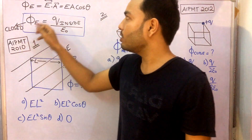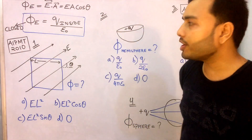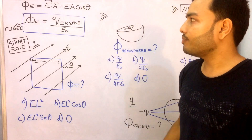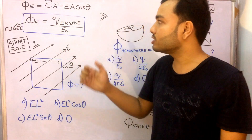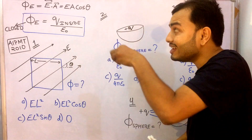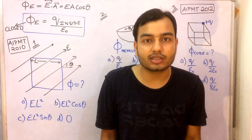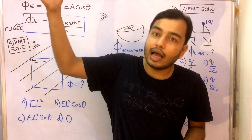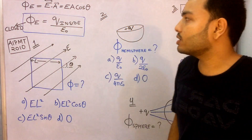Let's revise: electric flux is E dot A, where A is the area vector perpendicular to the surface. For a three-dimensional body, the perpendicular is taken outwards, giving E·A·cosθ. Gauss law states the total flux through a closed surface equals (1/ε₀) times the net charge enclosed. So for a room, instead of computing E·A at each point, the total flux equals the net charge inside divided by ε₀.